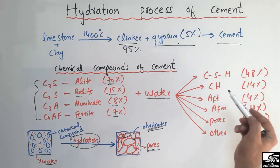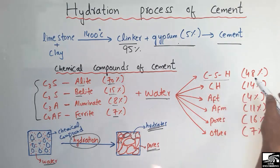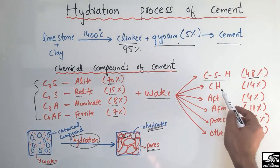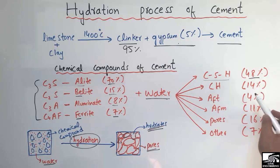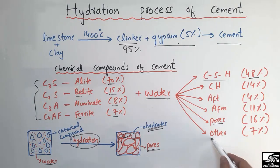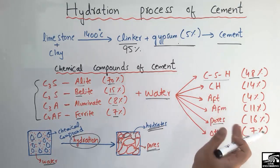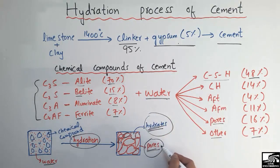The first and most important hydrate is CSH (calcium silicate hydrate), present at almost 48 percent. CH (calcium hydroxide) is 14 percent, AFt (ettringite) is four percent, AFm is 11 percent, pores are about 16 percent, and other unhydrated products make up about seven percent. Essentially, cement is a composition of hydrates and pores.